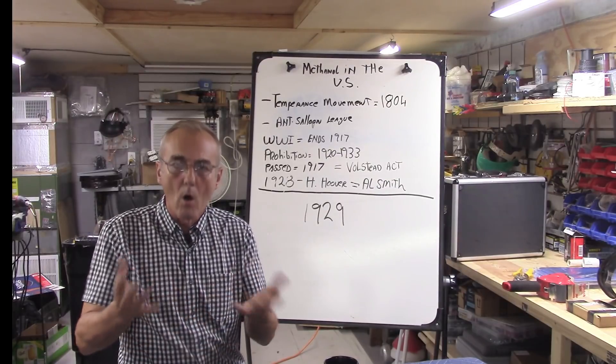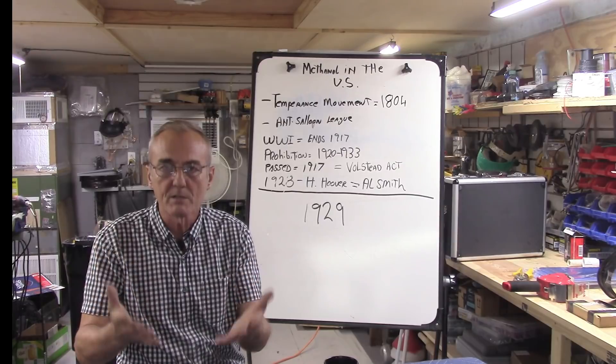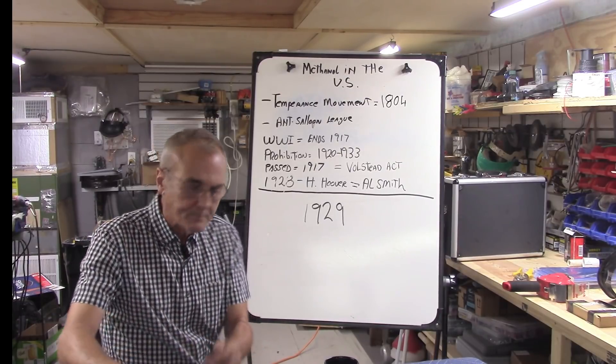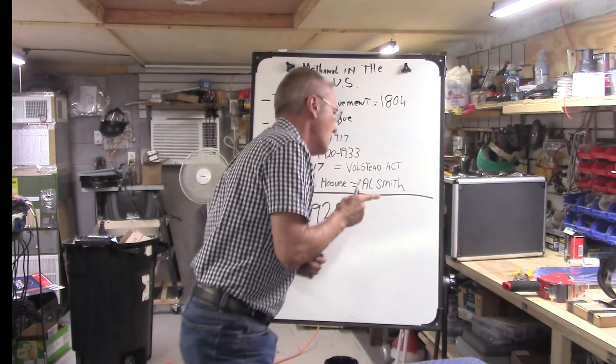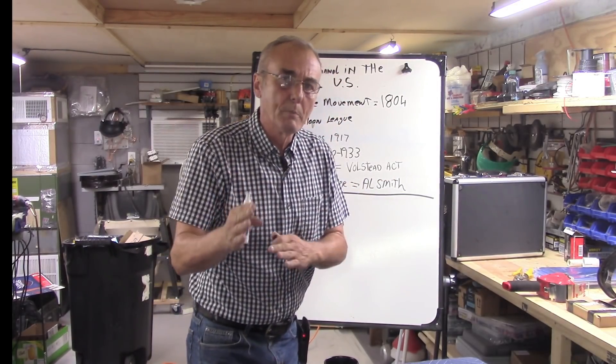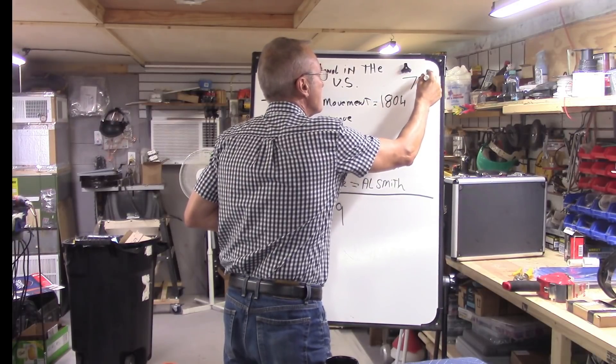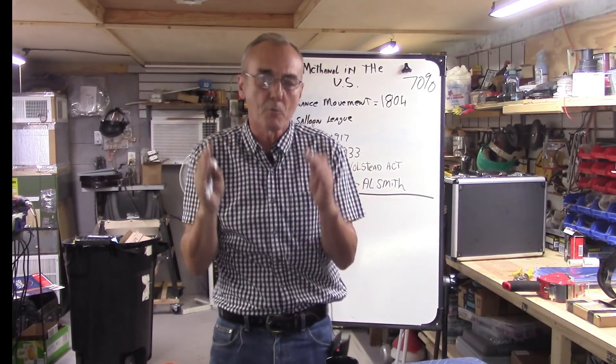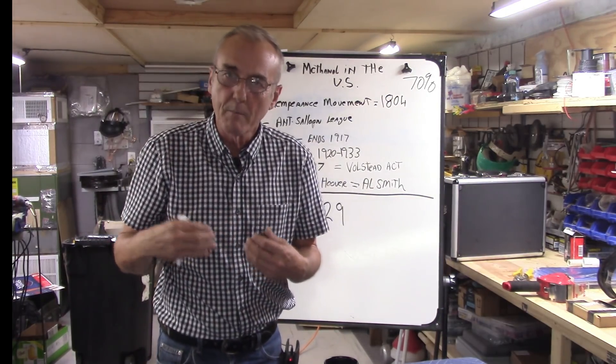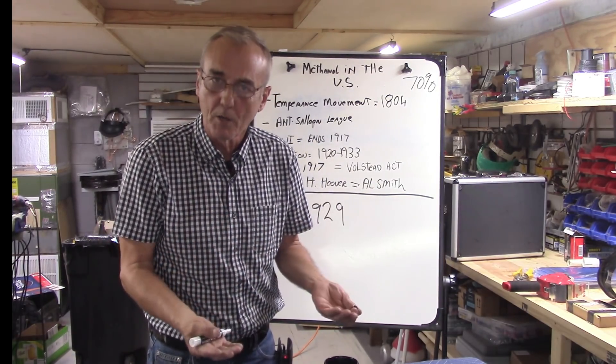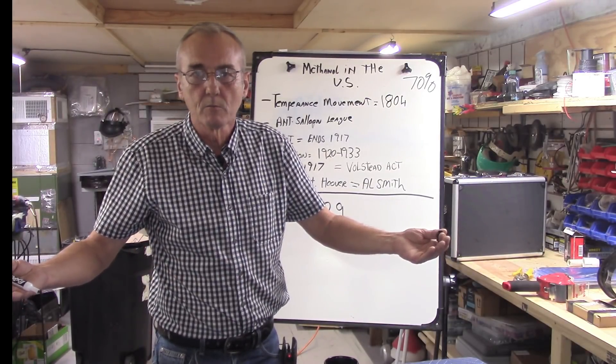It's interesting to note that up until prohibition started, 70% - keep this figure in mind - 70% of the revenues generated by the U.S. government was generated by the revenue collected from alcohol tax.